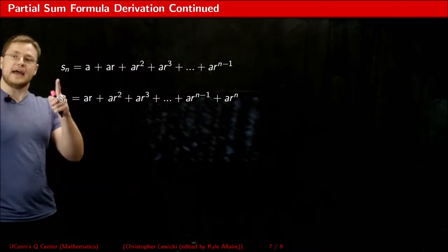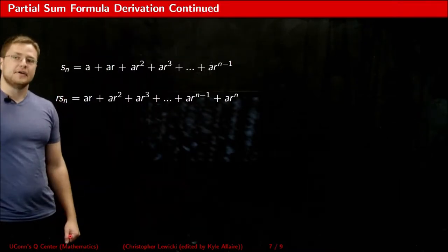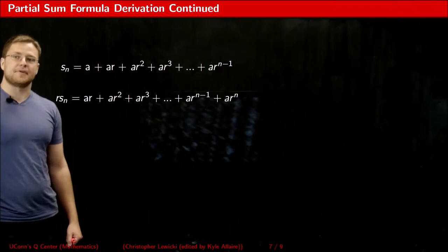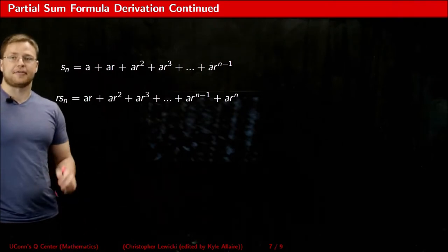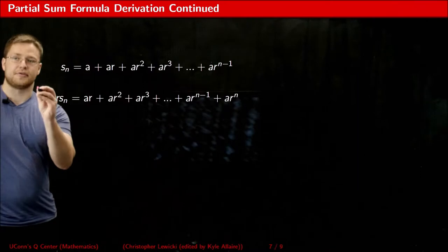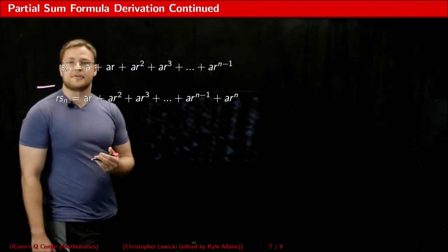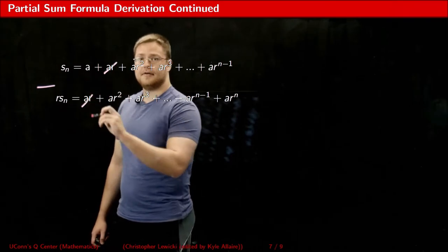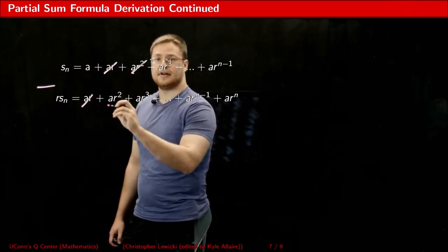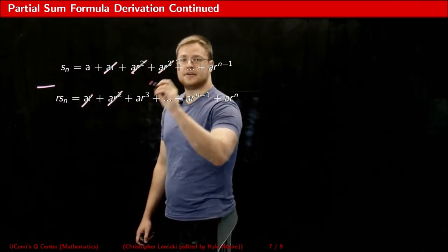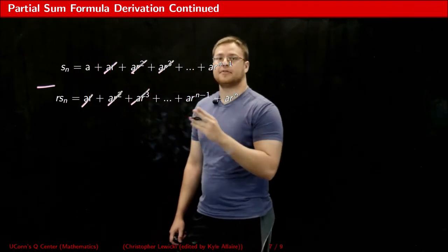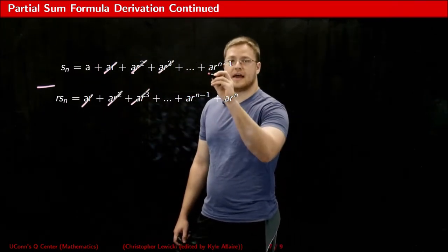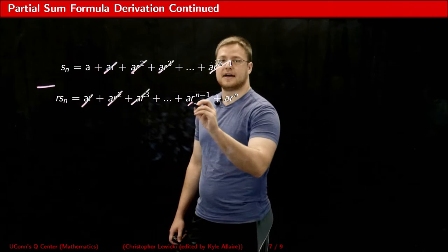When you look at SN and RSN when they're right next to each other, it becomes very clear that they have a lot of common terms. This means if we were to subtract the two of these, a lot of the terms are going to cancel out. I could tell that the AR is going to cancel out, the AR squared is going to cancel out, the AR cubed, and everything leading up to and including AR raised to the power of N minus one.